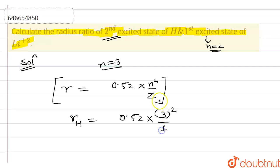And R for lithium 2 plus is equal to 0.52 into 2 to the power 2 divided by lithium that is 3.